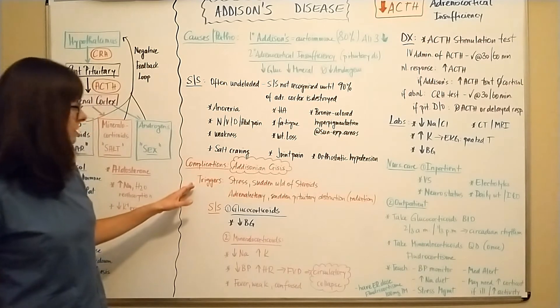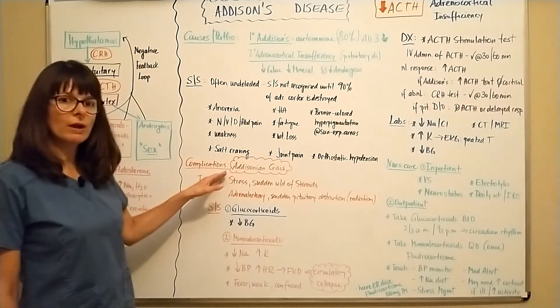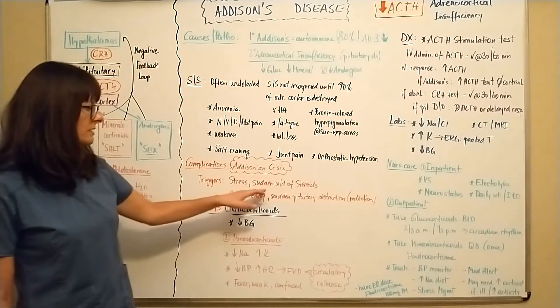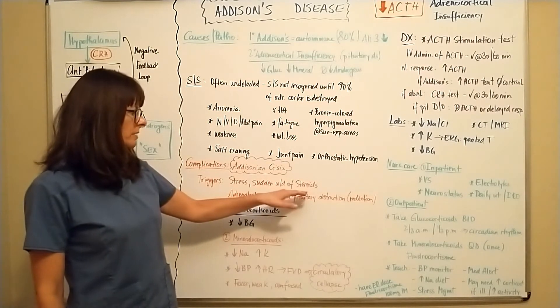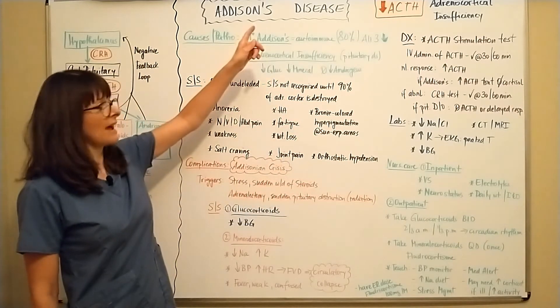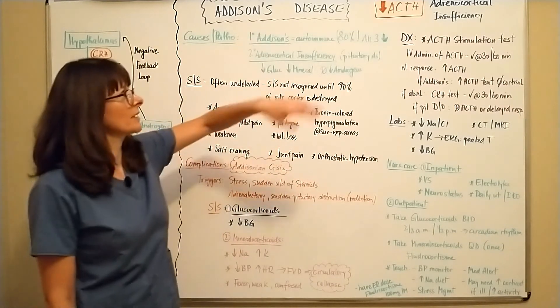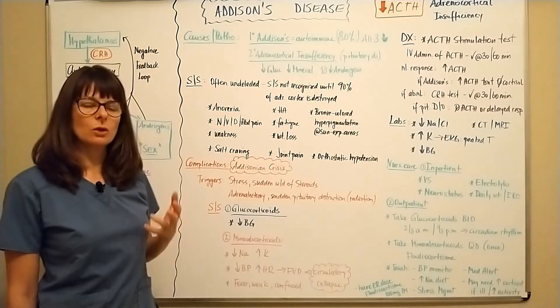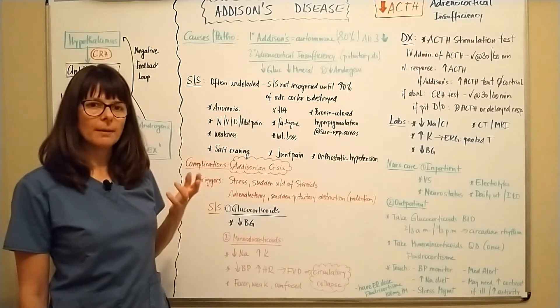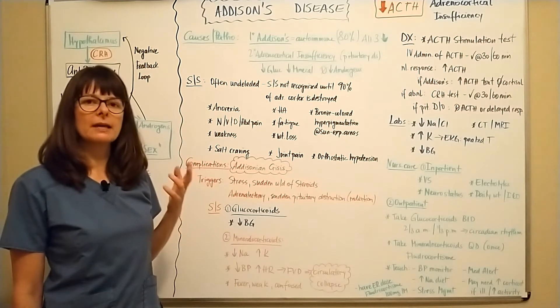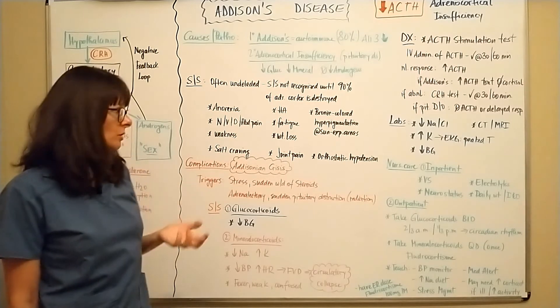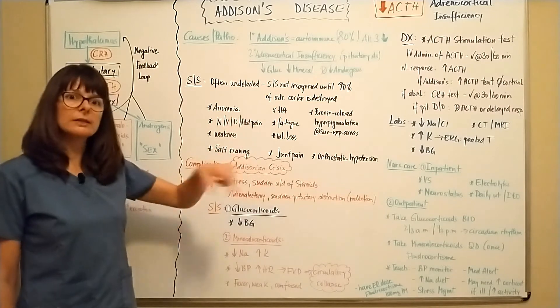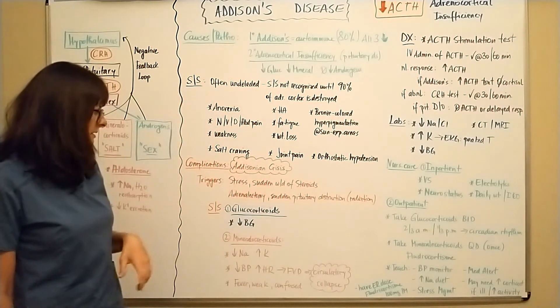Now, complications from Addison's disease is Addisonian crisis, and that can be life-threatening. Triggers can be stress or sudden withdrawal of steroids. The opposite of Addison's disease is called Cushing's disease. And that is when we have too much ACTH in the system. And that is 90% induced by steroids, by chronic administration of steroids. So now if suddenly these steroids are withdrawn, it can lead to the opposite of Addison's disease.